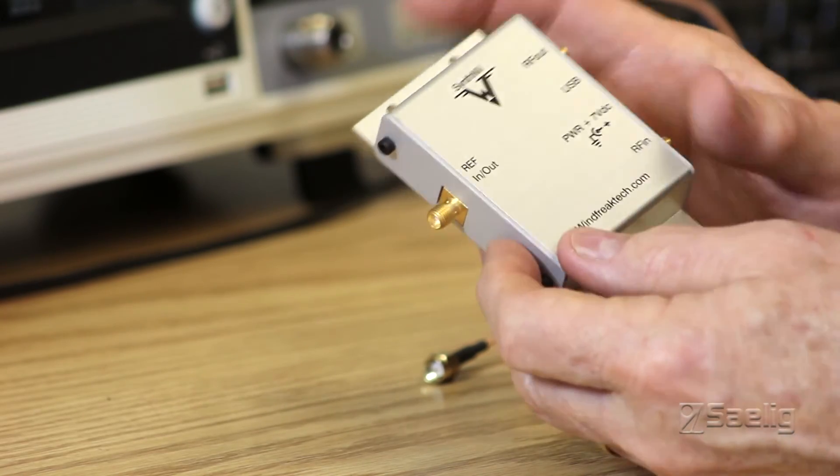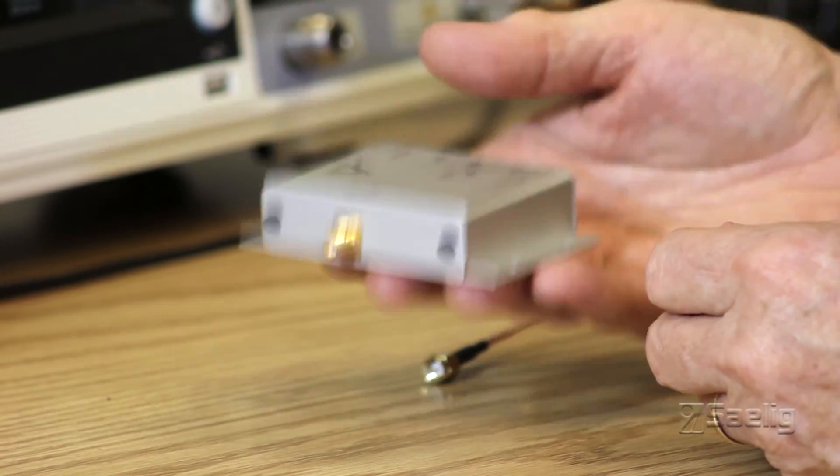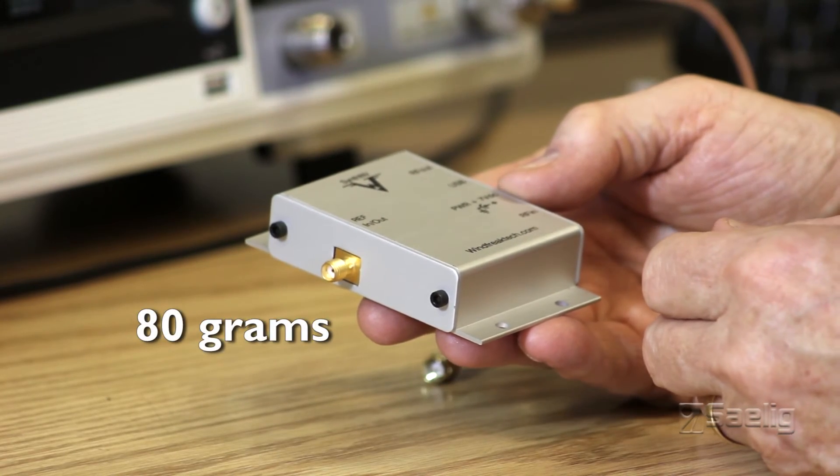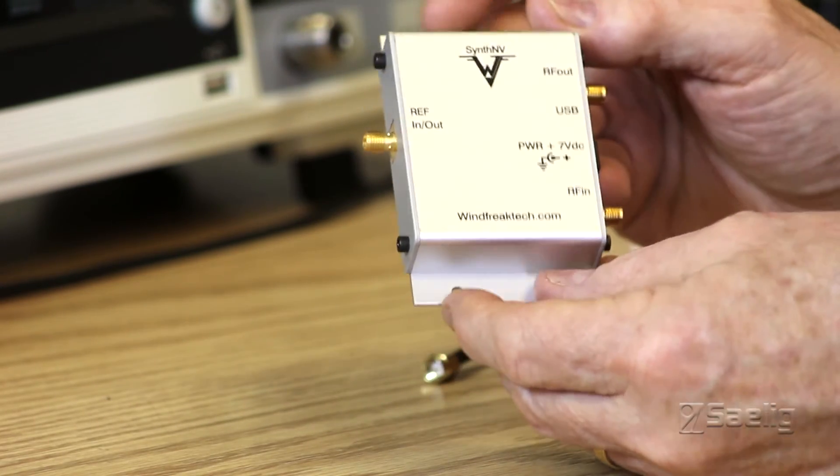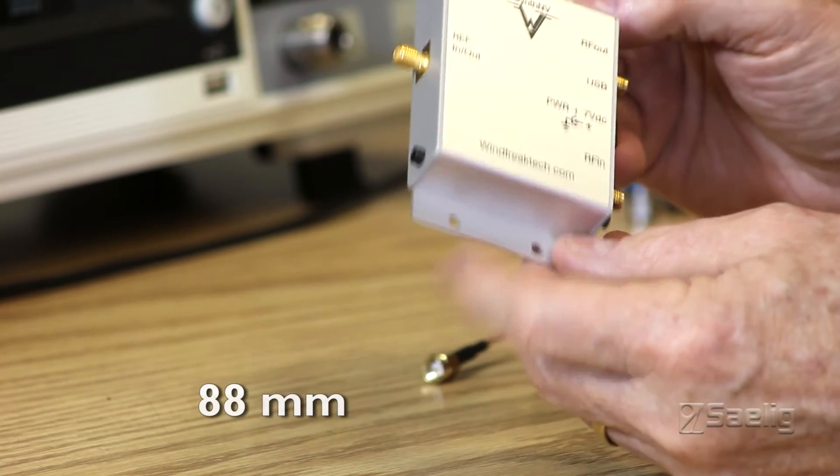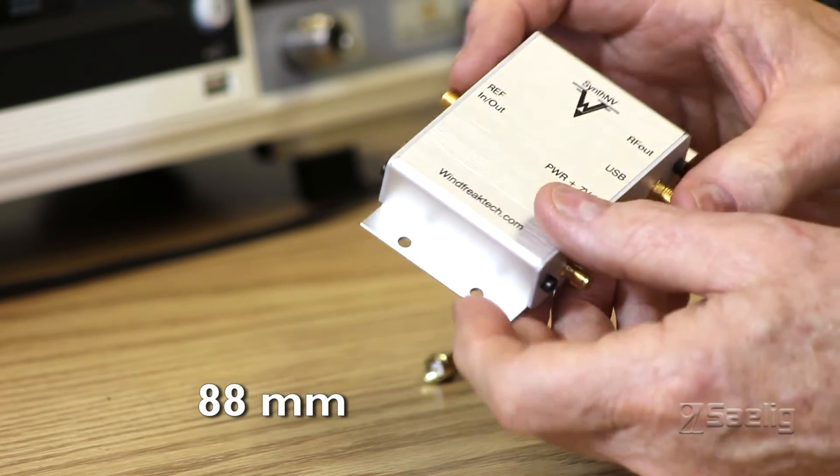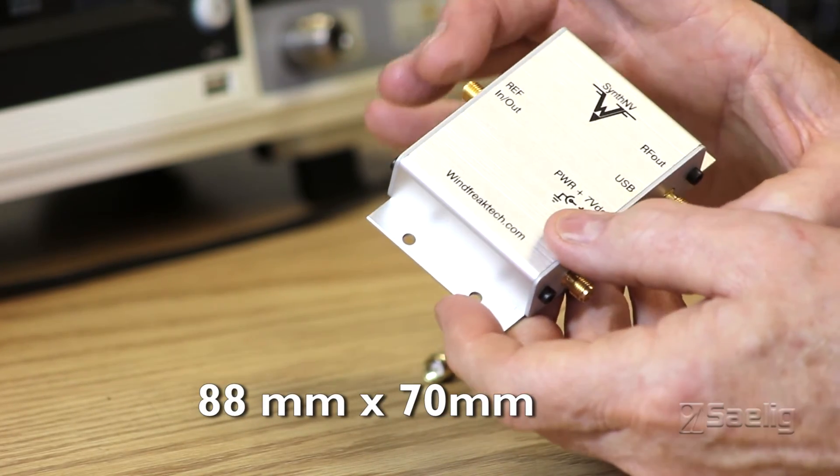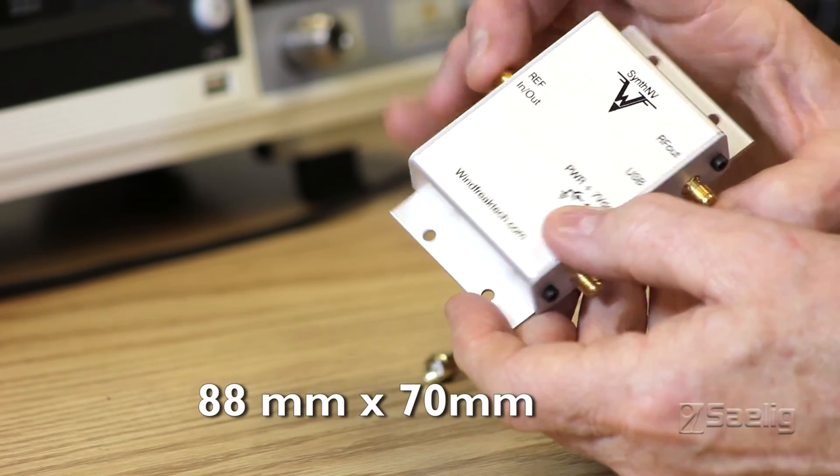So that's a little bit about it. It's quite a light little thing, it weighs 80 grams and the overall dimensions are roughly 88 millimeters here by about 70 millimeters from the ends of the SMAs and it's about 19 millimeters thick like that.